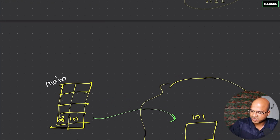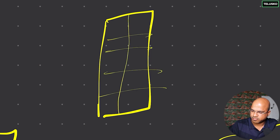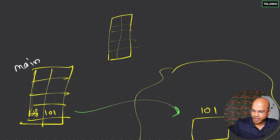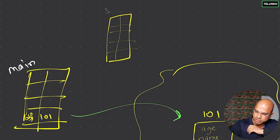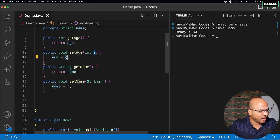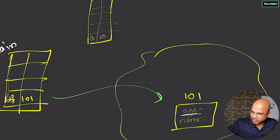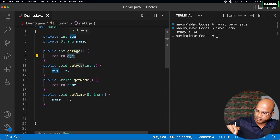'setAge' will have its own stack frame here. This frame is linked to the object at address 101, which is the human object. That object also has its instance variables: 'age' and 'name'. Now inside the 'setAge' stack we have a local variable 'a' with value 30. We then assign that same value 30 to the instance variable 'age'. So both 'a' and 'age' hold 30, and that's why when you call 'getAge' it returns 30 — and that's working perfectly.